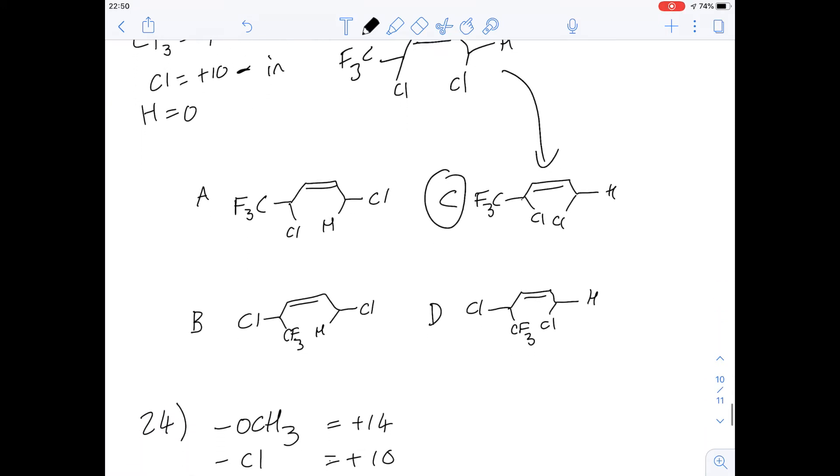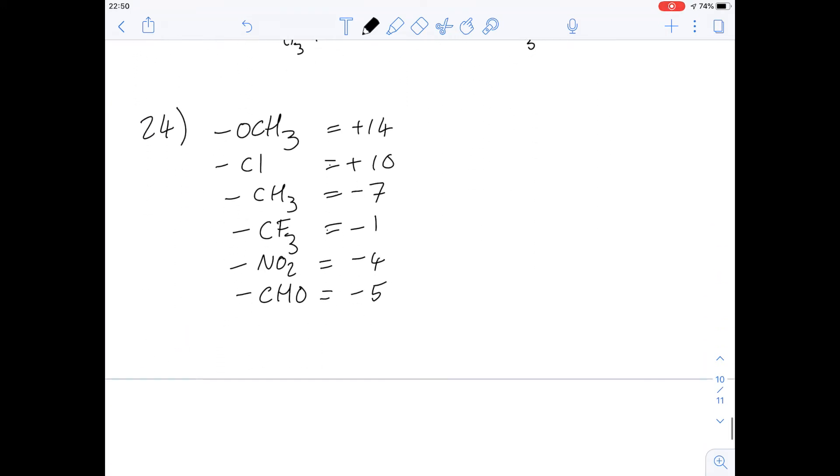Now if we look at 24, I've drawn out all the different energies again here just to save going and looking at them. We're told for the following structure, considering the set of molecules where the R group is going to be a number of these groups here, for how many of these molecules does the photochemically promoted reaction result in the R group rotating in?